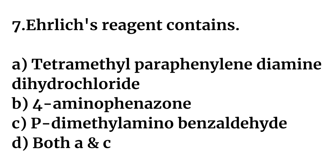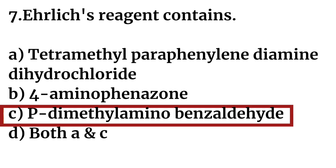Question number seven: Ehrlich reagent contains — Option A: tetramethyl paraphenylenediamine dihydrochloride. Option B: 4-aminophenazone. Option C: paradimethylaminobenzaldehyde. Option D: both A and C. The right answer is Option C: paradimethylaminobenzaldehyde. Ehrlich reagent contains PDAB, or paradimethylaminobenzaldehyde.